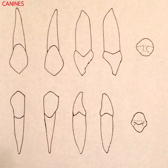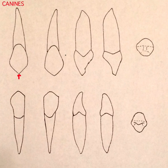One of the main structural components of all canines is that they have one cusp tip, and that will be a staple structural feature as we talk about the topography of the canines from all five aspects.